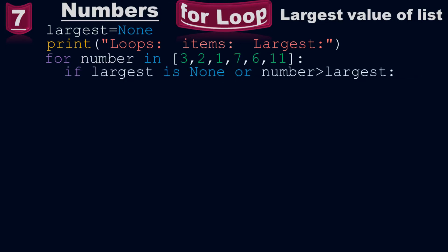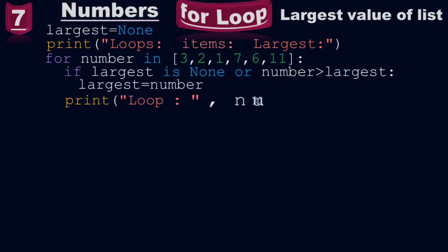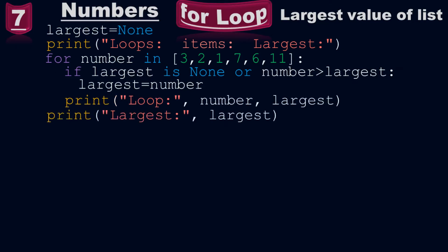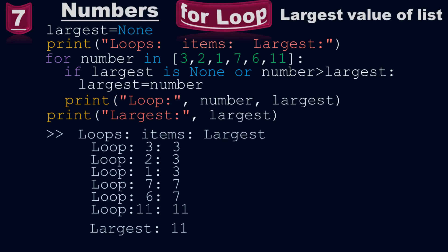If largest is none, or number is greater than largest, then largest equals to number. Print 'loop:', number, largest. And take print of 'largest:', largest. When you run it, you will get the output. This is the answer for this program.